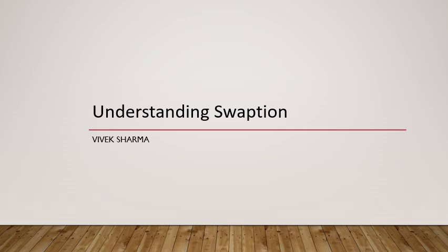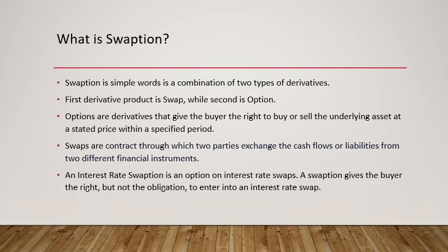Swaption, as the name suggests, is basically made of two derivative instruments — one is the swap and the second is the option. So if you combine swap and option together you end up with what is called a swaption. Swaption is a contract which is created from options and swaps.